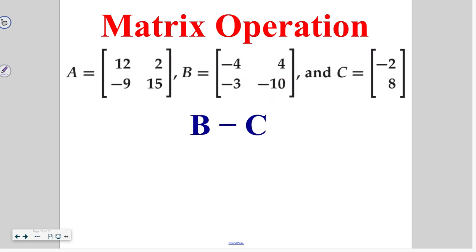Next, it wants us to look at B minus C. B is a two by two matrix, while C is a two by one matrix. Since these two do not have the same size, this is not a possible matrix operation. There is nothing to match up here. So this is not possible.